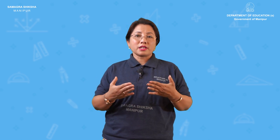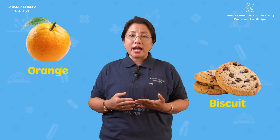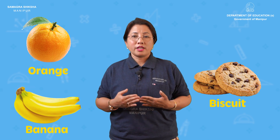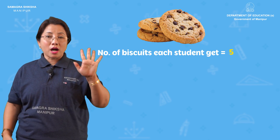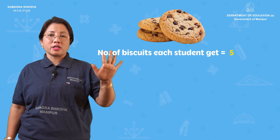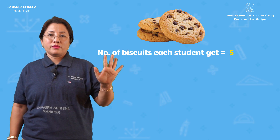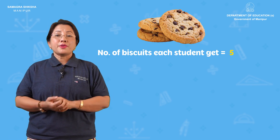A child had biscuits, oranges, and bananas. Who wants a biscuit? How much do they have? Each child gets five biscuits. The student number is the biscuit count.